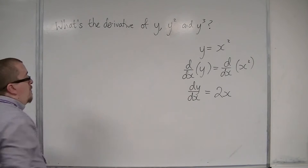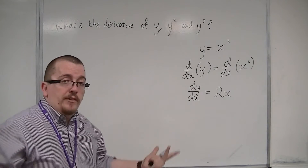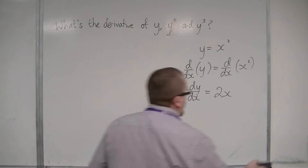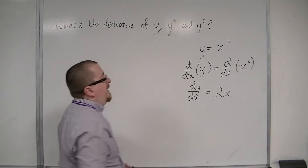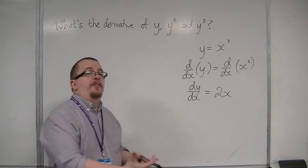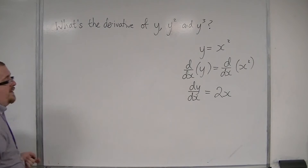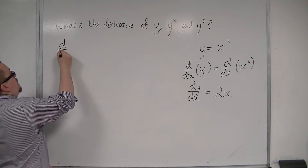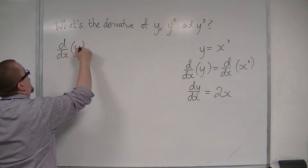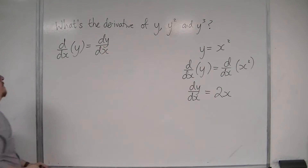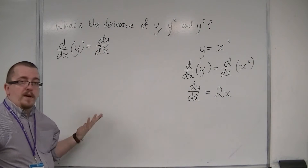From that, we can immediately say that if I'm differentiating y with respect to x, and y is a function of x — which we take it to be here — then the derivative is just dy by dx. That seems reasonable enough. The derivative of y with respect to x is dy by dx.